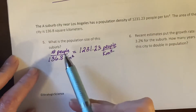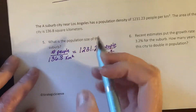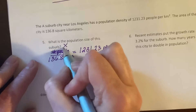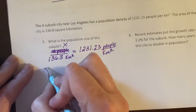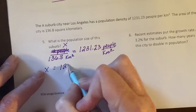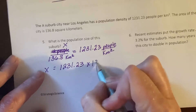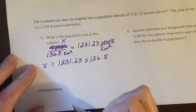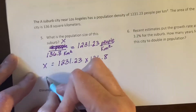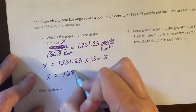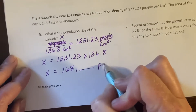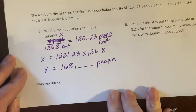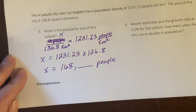We need to solve for x — the number of people. We can set up the equation and cross multiply. X equals the density times the area, and when we multiply those together, x comes out in people. That's how you solve this one — you have to work backwards in the formula. This is pre-algebra, stuff you did a long time ago.